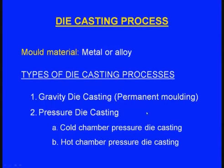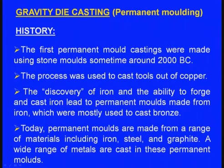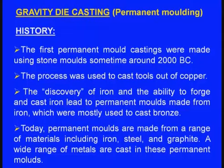We will see all these one by one. First, gravity die casting, also known as the permanent moulding process. The first permanent mould castings were made using stone moulds sometime around 2000 BC. This was in practice even during BC — though at that time metallic moulds were not used, people poured molten metal by gravity between stone or sand moulds. This process was used to cast tools out of copper.